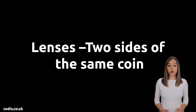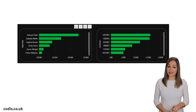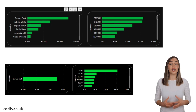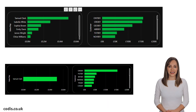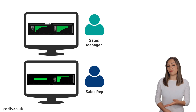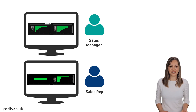Lenses: two sides of the same coin. All users have the same link, but amazingly, see only the Sage 200 data that you allow them to see. Sales reps can only see their sales, while sales managers can see everyone's sales.